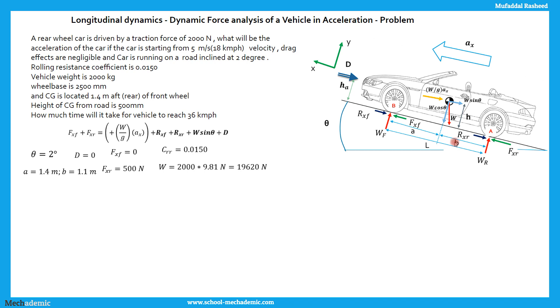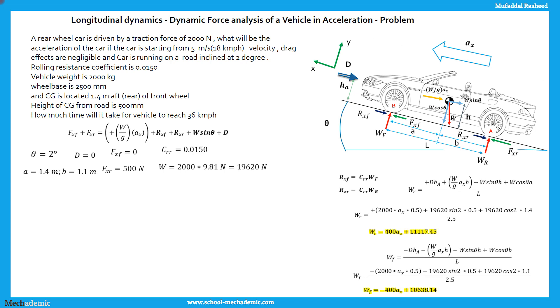A this value is 1.4, this value of B is 1.1. Fxr this value is 500 N, W is 2000 into 9.81 N. 2000 is in kg, W is the weight, the force acting downwards, 2000 into 9.81 the acceleration due to gravity which gives us 19,620 N. From the moment balance equations, we had the equations for the Wf and Wr derived as shown over here. Rxf and Rxr are CRR into Wf and CRR into Wr respectively, which is the coefficient of rolling resistance into the vertical load acting at the front and rear wheels respectively.